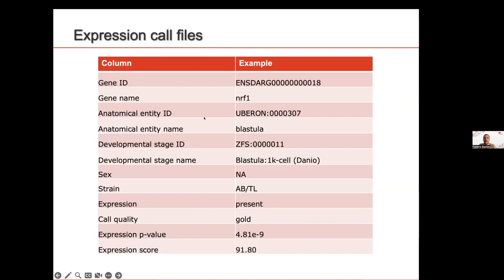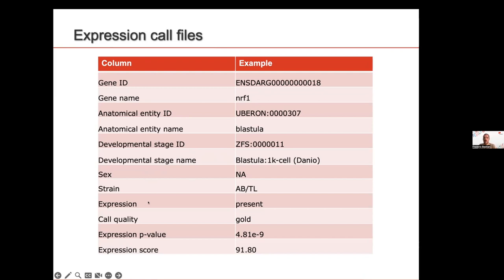Here is an example of the information you can retrieve in these files. You will have the gene ID and gene name, the Uberon anatomical entity ID and name. For single-cell data, you will also have the cell type ID and name, developmental stage, sex information — which may be NA if not provided — and strain information. In the simple file, you will have the expression call — present — the call quality based on the FDR p-value, the actual FDR p-value, and the expression score.